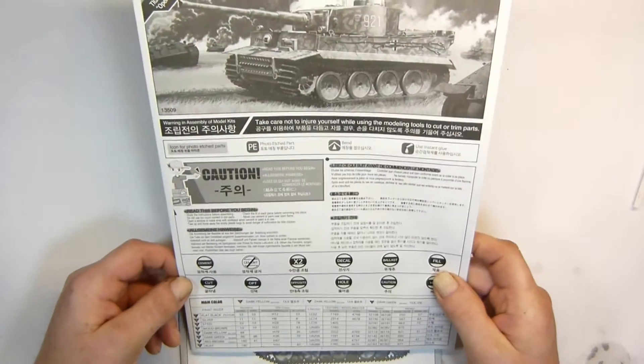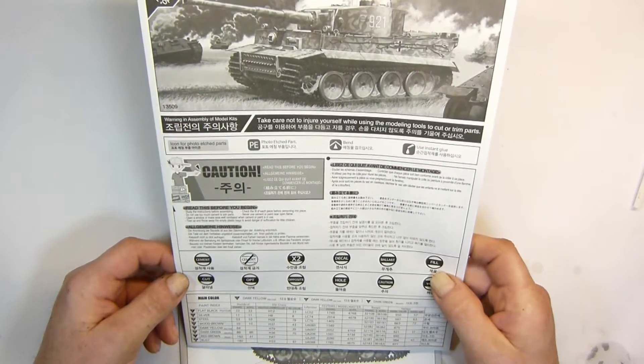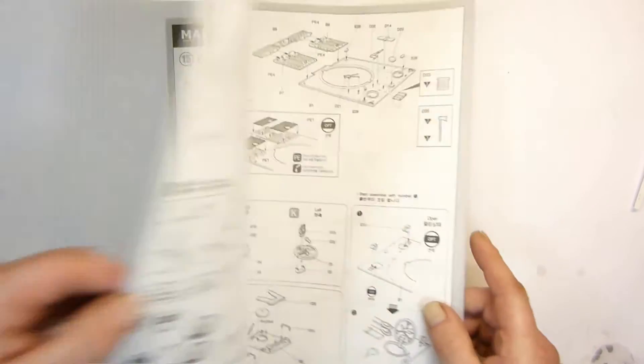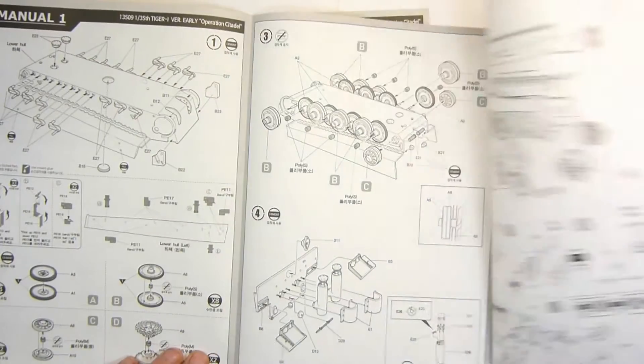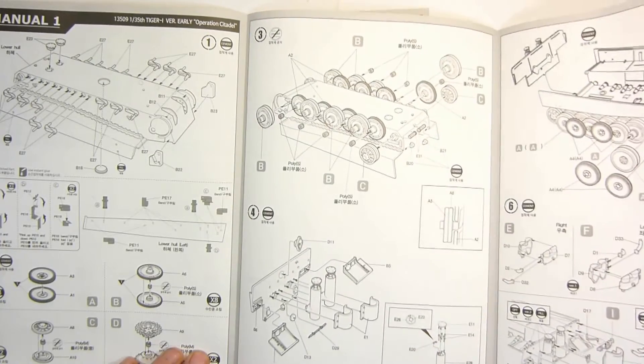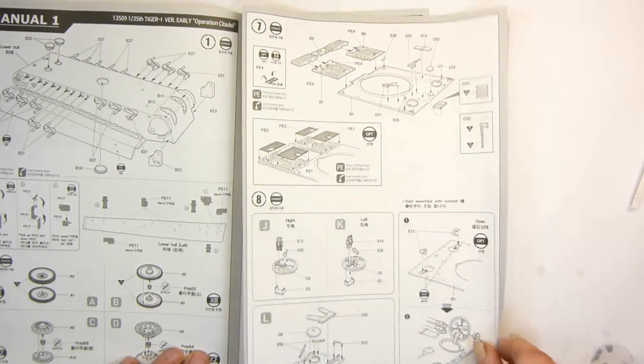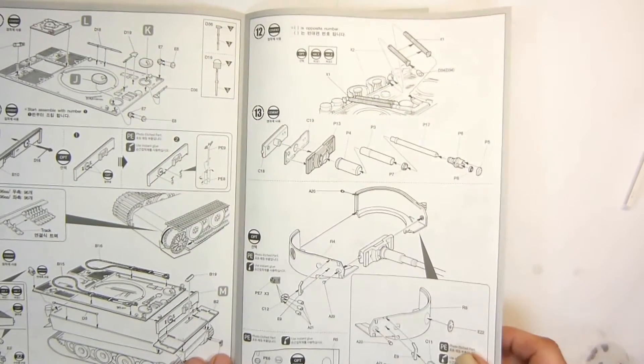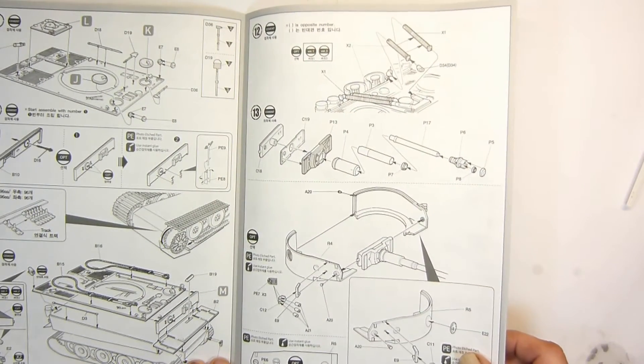The first instruction manual is really good. It gives you color call-outs for Humbrol paint, Life Colour, Testors, Model Masters, Revell, and Vallejo, which is quite a good touch. There's quite a bit of footage in this kit for the price and it's very clearly marked where the options are, which is really good.